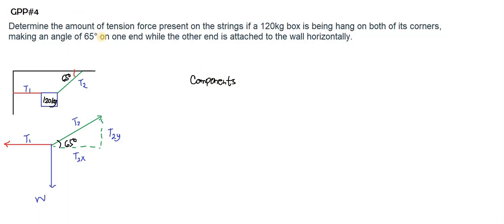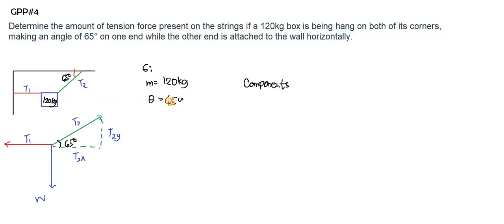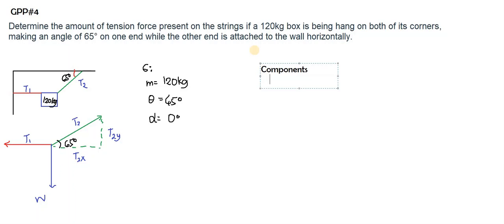We can follow the GRASA format here. Mass is equal to 120 kilograms, and theta is equal to 65 degrees. If we have two angles we can name the other one angle phi, alpha, or beta. Here, since the horizontal string has no angle, we can write angle alpha equal to zero degrees. Now let's write out the components, starting with the x-components.